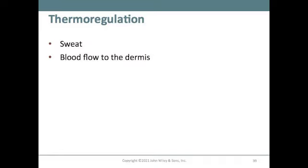For thermal regulation, the skin uses sweat and blood flow to the dermis. Blood flow helps keep the dermis cool. When you sweat during physical activity, sweat appears on the skin surface, evaporates when air hits it, and cools the body — helping maintain homeostasis.